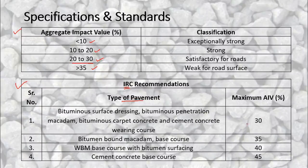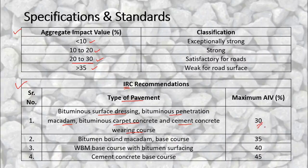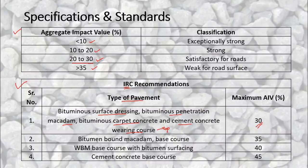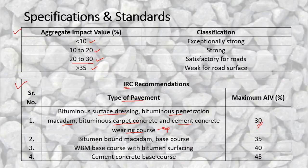As per IRC specifications, the maximum AIV allowed varies by pavement layer. For bituminous concrete (a surface/wearing course), the maximum is 24% — if AIV is more than 24%, the aggregate cannot be used in that course. For binder course, the maximum is 30%, and for base course, it is also 30%. As we go towards lower layers, there is a relaxation in the allowable AIV value, because the surface course is subjected to more impact loading compared to binder, base, and subbase layers.